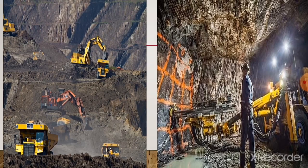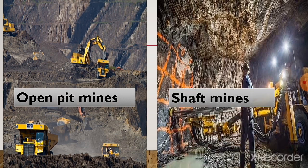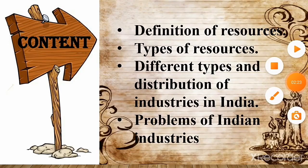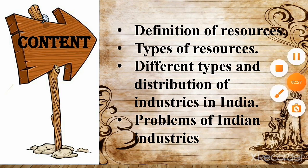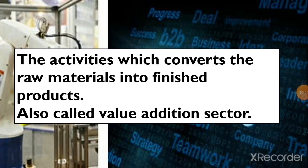Mining is classified into two types. One is open pit mining, where minerals are taken from the crust of the earth. Next, shaft mines, where minerals are taken underground. Now let's start today's portion. Industries refers to the activities which convert the raw material into finished products. This sector is also called the value addition sector.